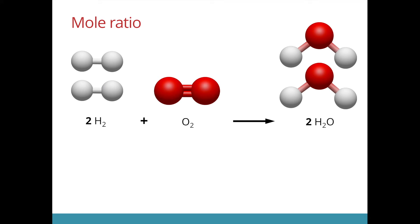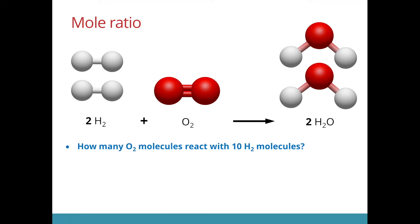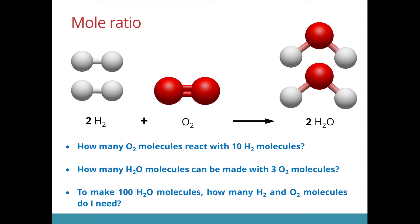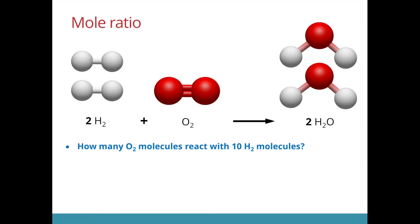Let's go on to an actual chemical equation. In this case, the equation says that 2 molecules of hydrogen reacts with 1 molecule of oxygen to produce 2 molecules of water. Let's look at the first question: how many oxygen molecules can react with 10 hydrogen molecules? We look at the numbers in front — these are called the coefficients. We see that hydrogen reacts with oxygen in a 2 is to 1 ratio. If I have 10 of these, I will need 5 oxygen molecules.